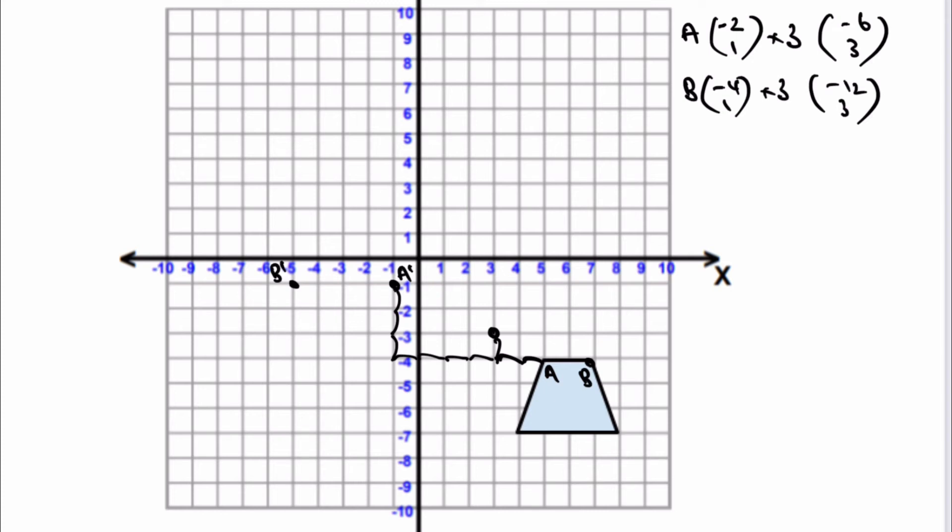Let's have a look then at point number C, which is this bottom left hand corner. So C, if I want to get to my center, I'm going to go along one and then up 1, 2, 3, 4. So it's going to be a vector of minus one, four. Multiply that by three and that's going to give me minus three, 12.